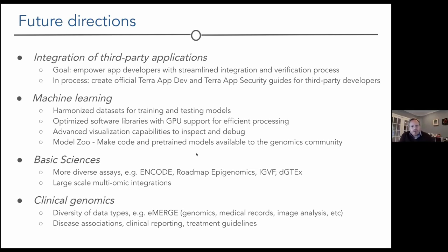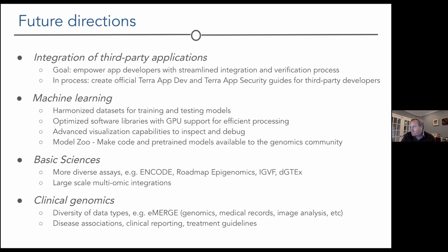One attendee asked about timelines, specifically the integration of ENCODE roadmap data. The ENCODE total data footprint is about one and a half petabytes, currently in AWS. The first phase is to mirror the data in GCP — that's actually underway now. Over time, more sophisticated capabilities will be built out. Roadmap discussions have just started, so that'll be a more extended timeline. Roadmap is actually built into the ENCODE portal, so pushing the ENCODE portal gets it by default.